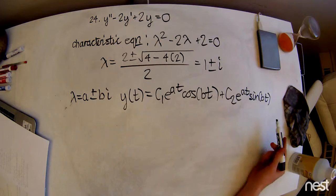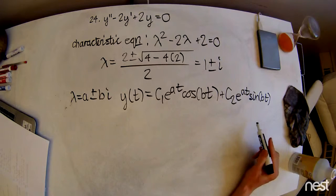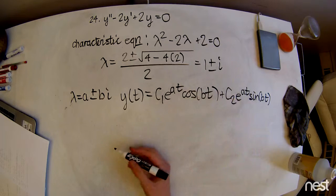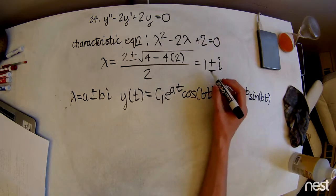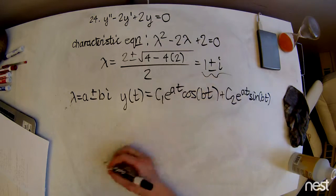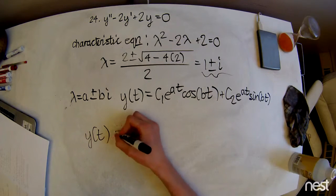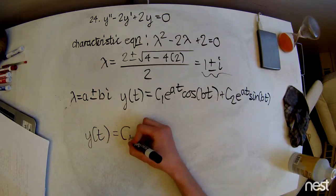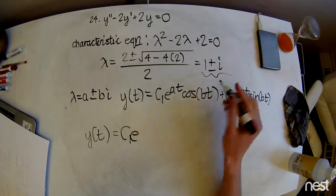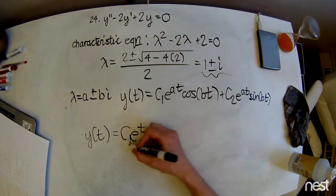So we can use this relationship to pretty quickly define our solution to this equation using this. We're just going to have y of t equals c1 e to the one times t, so just t.